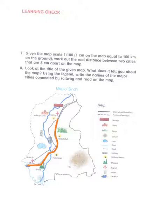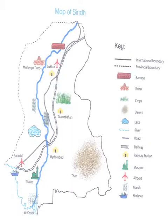The next question is: look at the title of the given map — what does it tell you about the map? Using the legend, write the names of the major cities connected by railway and road on the map.